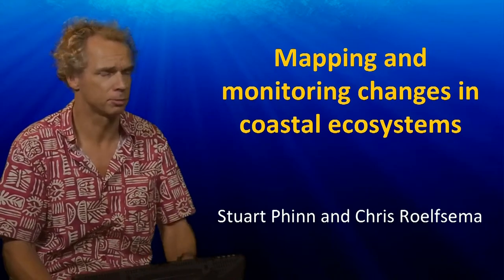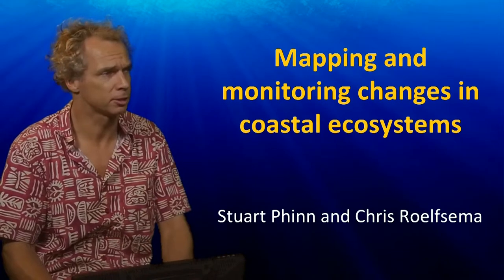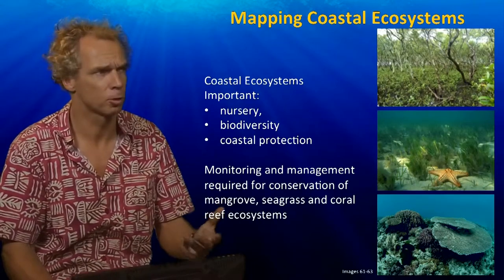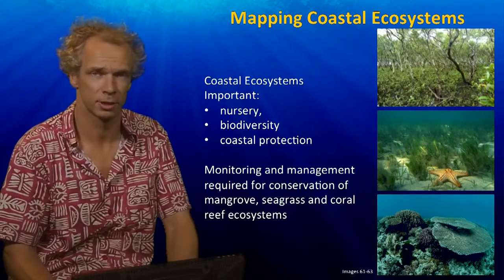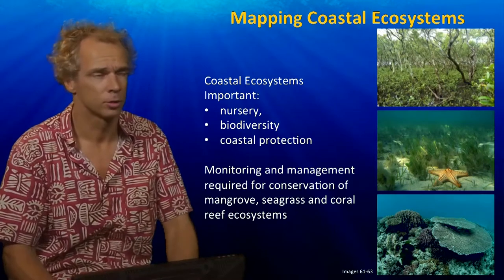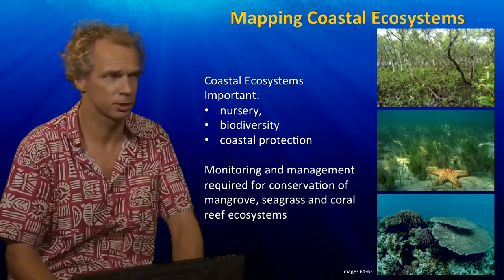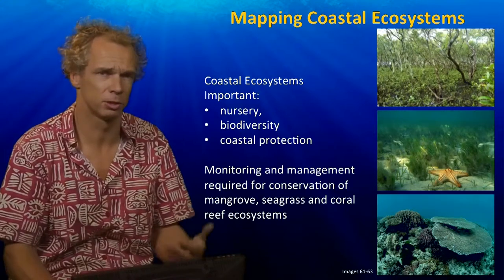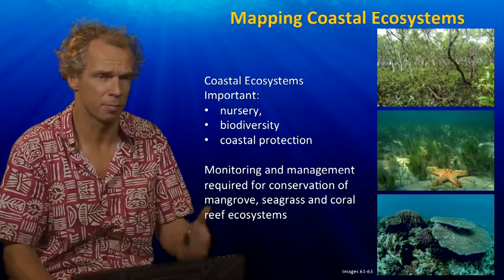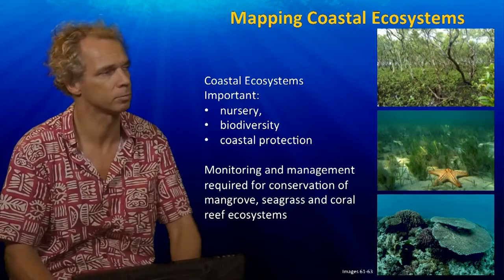Coastal ecosystems is where a lot of my research is happening. There are beautiful ecosystems and they consist of mangroves, coral reefs and seagrass habitats. These systems are important for nursery grounds, biodiversity and coastal protection. As a result we need to take care of them because there are impacts locally, as you probably know from previous lectures.